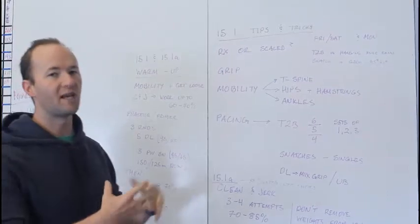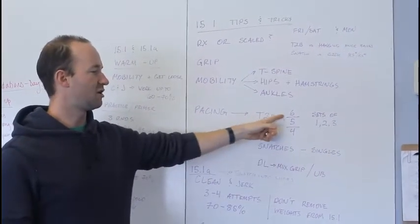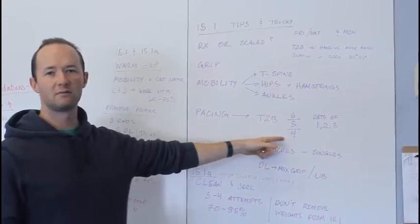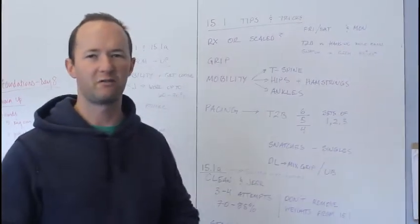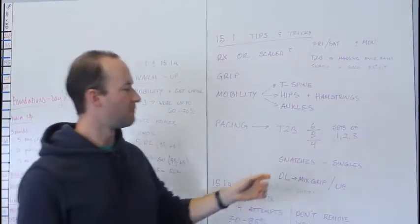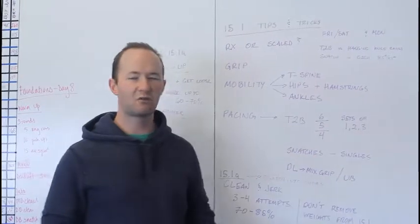So plan on breaking it up. If you can do a lot of toes to bar, I would recommend starting off with 6-5-4, a descending triplet. Some people will do 5-5-5, but I think 6-5-4 would be great. Or just do sets of 1, 2, or 3. Just get through the round. Be quick.